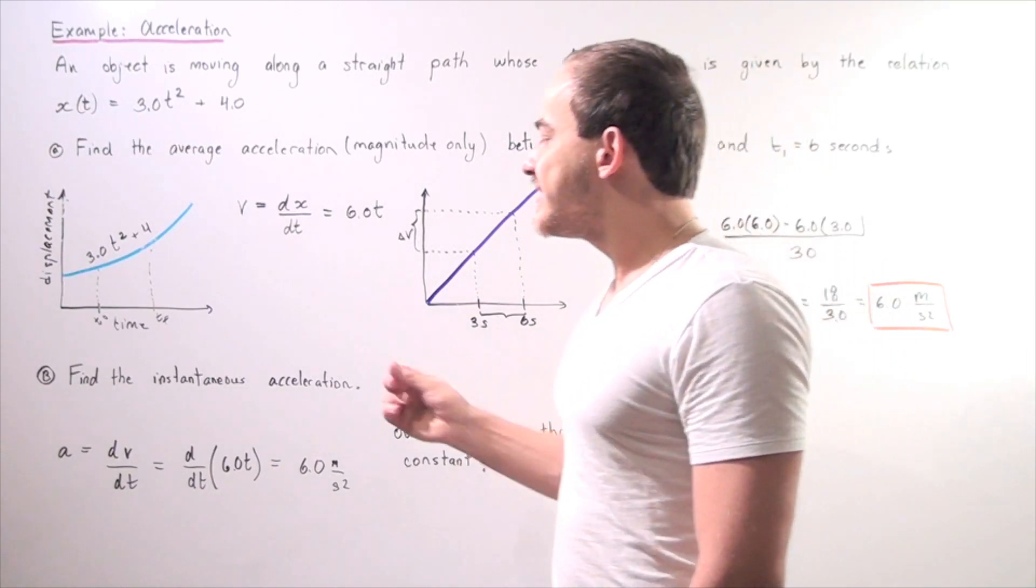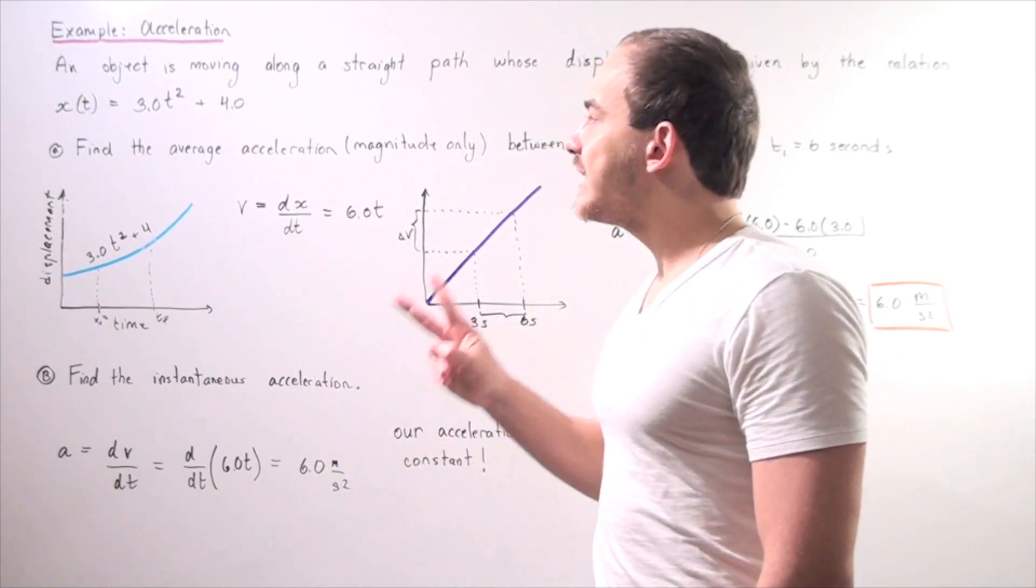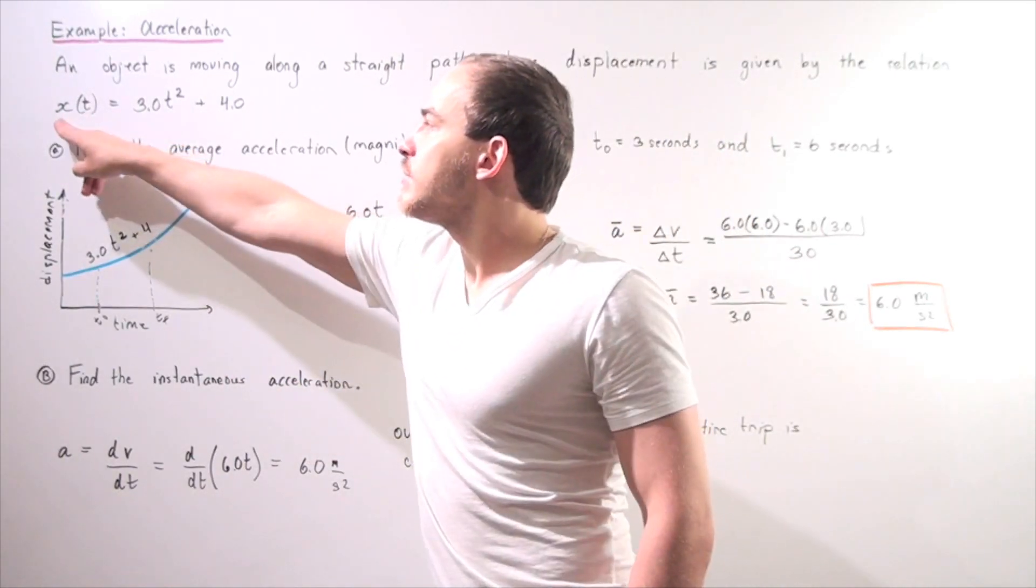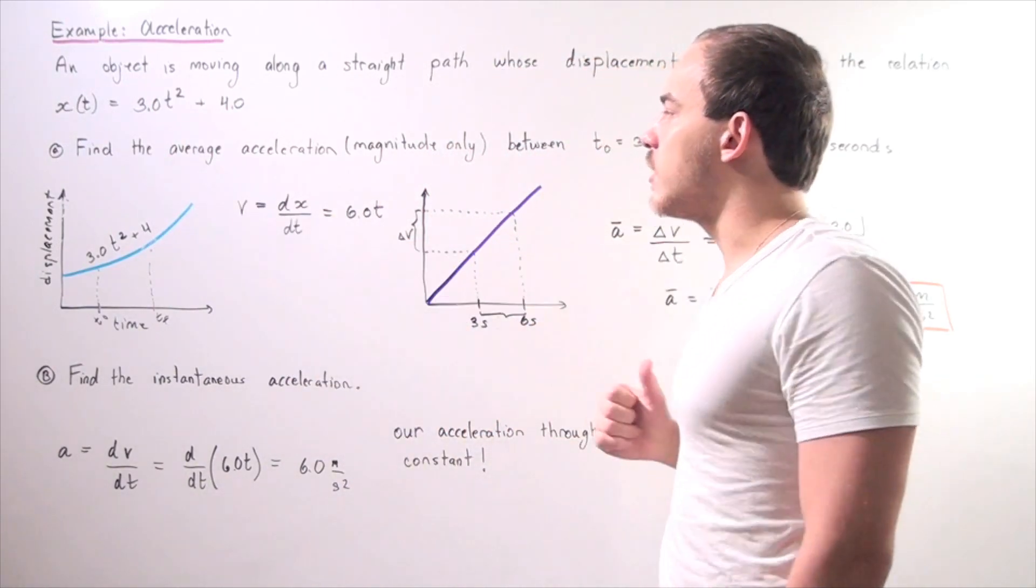Well, to find our instantaneous acceleration, we simply have to take either the second derivative of our displacement function with respect to time, or the first derivative of our velocity function.